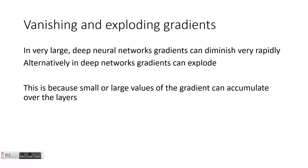Another problem in deep learning networks is what is known as vanishing and exploding gradients. When you have a very large and very deep neural network, during gradient descent the gradient can sometimes explode — increasing very rapidly to plus infinity — or on the other hand drop very rapidly and reach minus infinity.